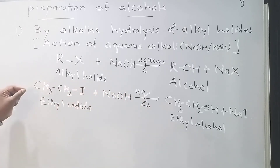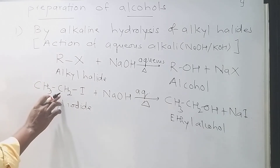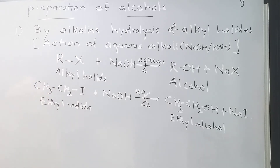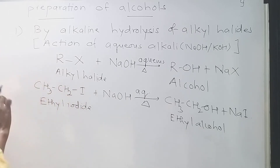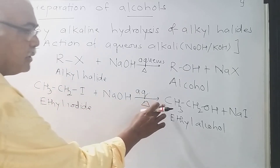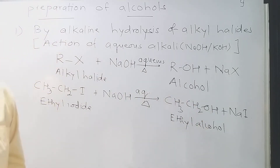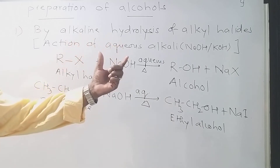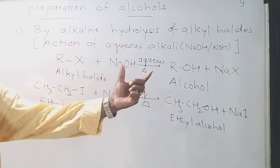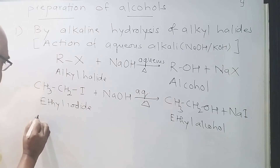Ethyl iodide is a primary alkyl halide because the halogen atom is attached to the primary carbon. When primary alkyl halides undergo alkaline hydrolysis, you get a primary alcohol as the product.